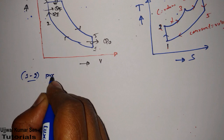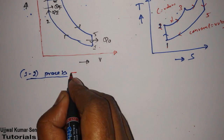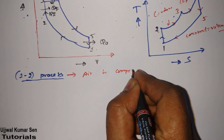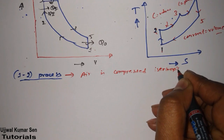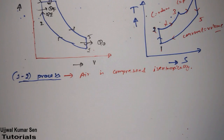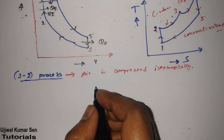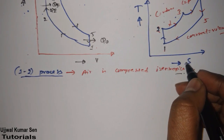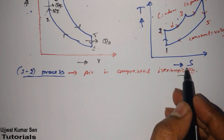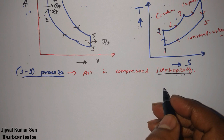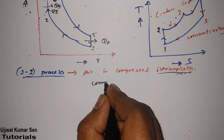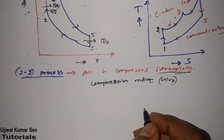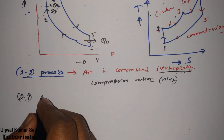For process 1→2: air is compressed isentropically, meaning entropy is constant from 1 to 2. Its compression ratio is equal to V1 divided by V2.